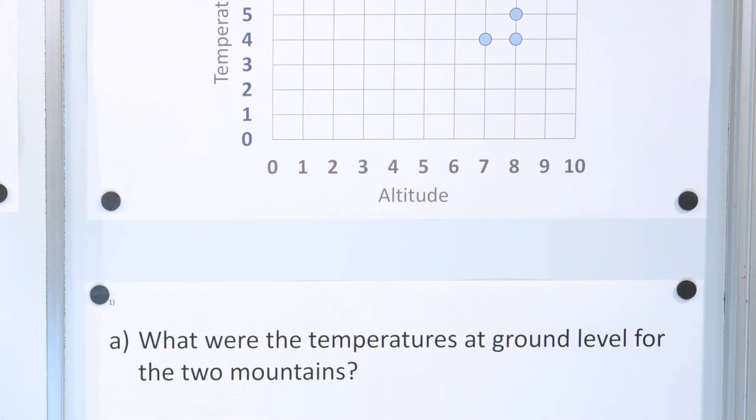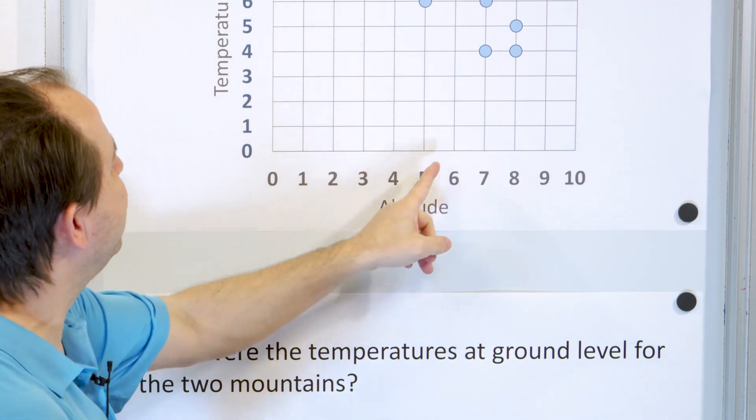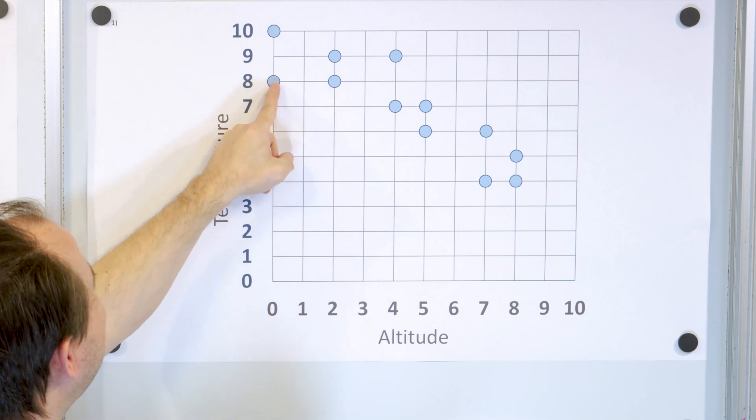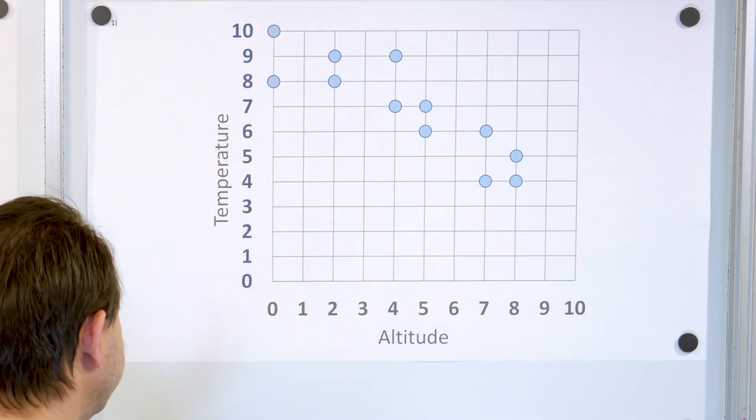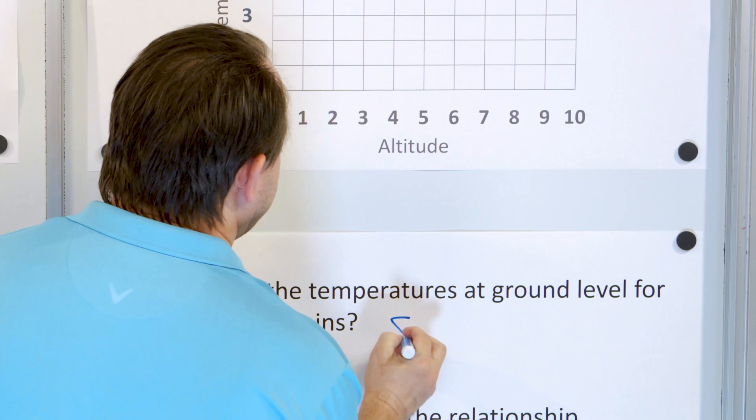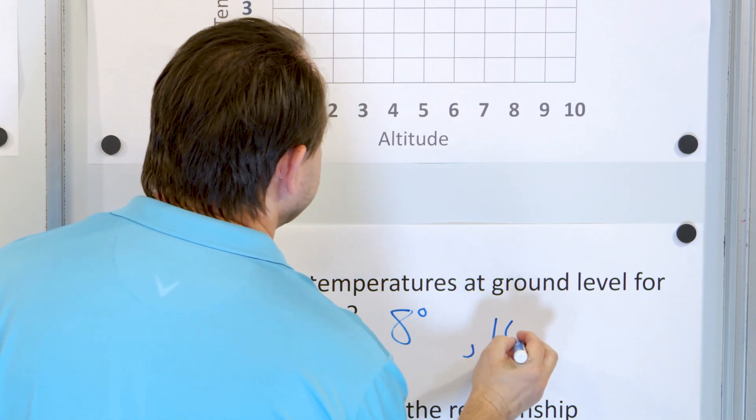First question: what were the temperatures at ground level for the two mountains? Ground level means altitude of zero. We can see the temperatures were eight degrees and ten degrees.